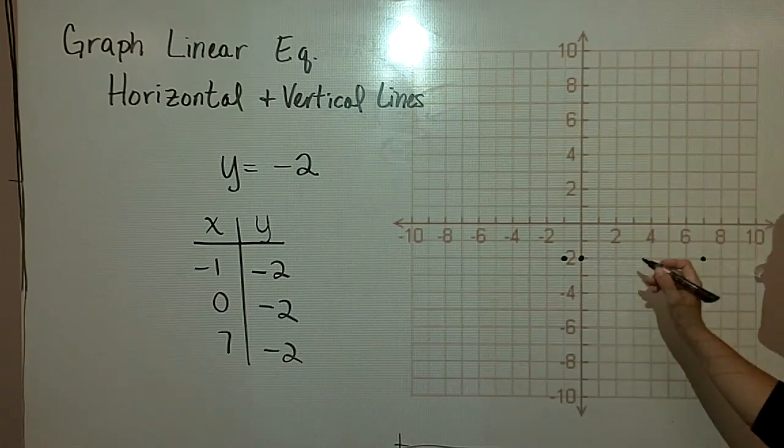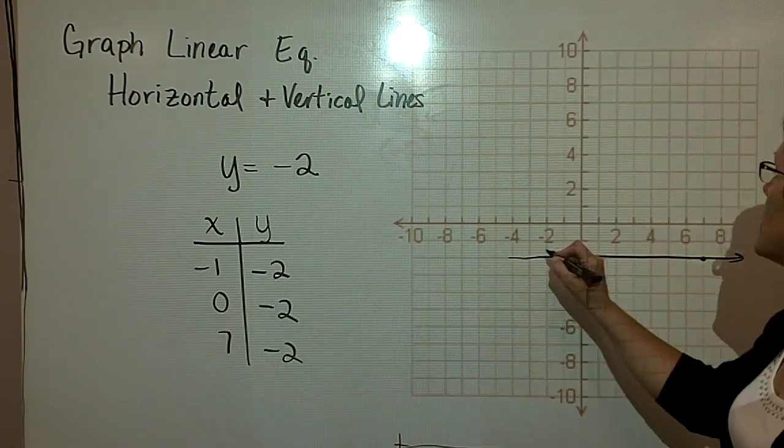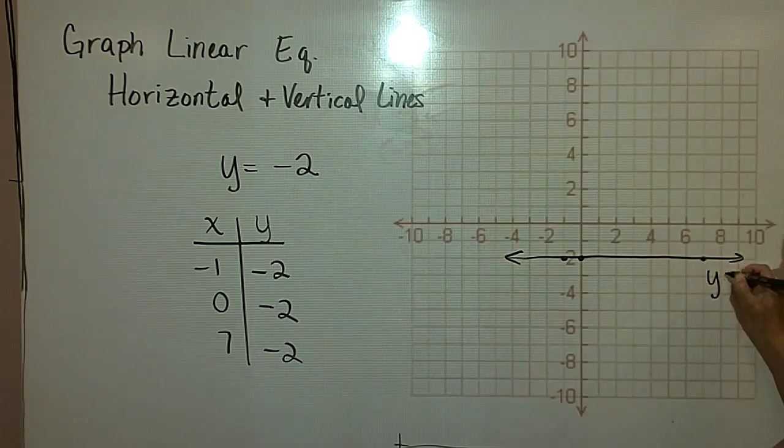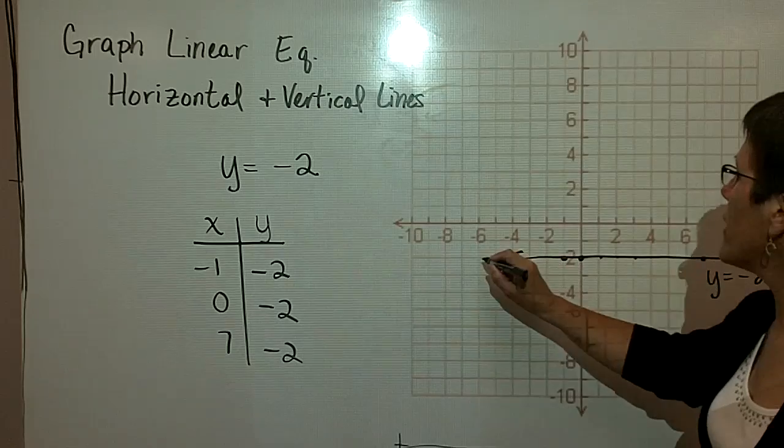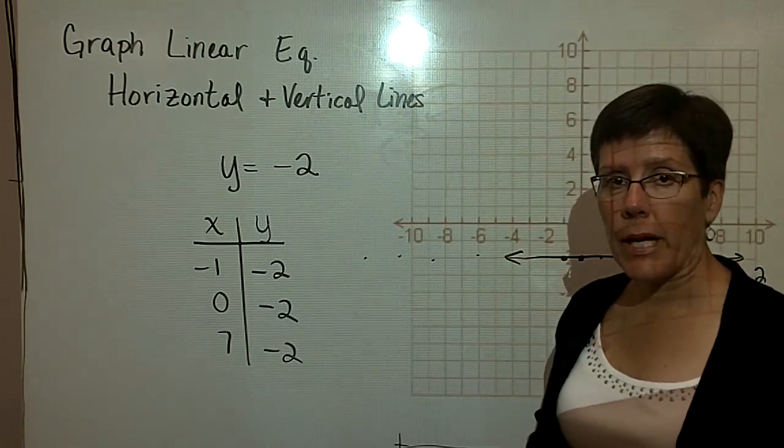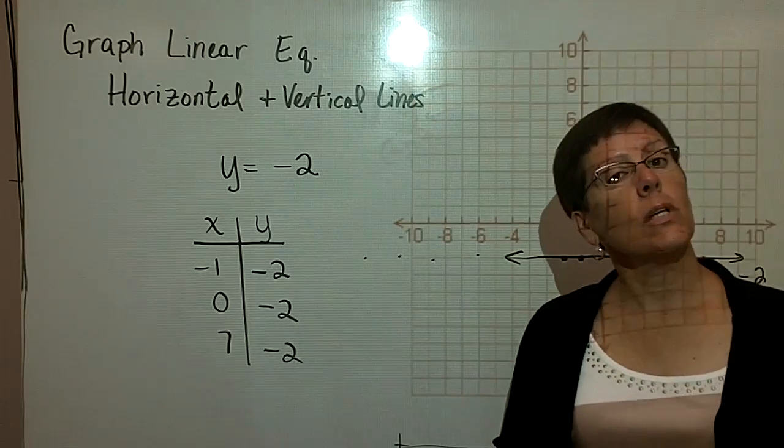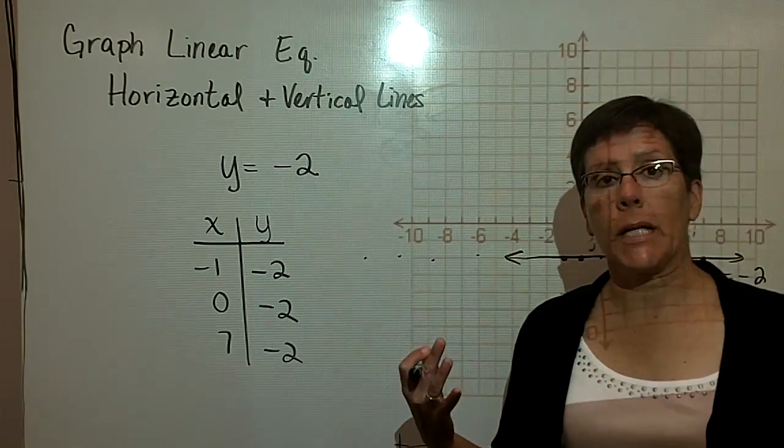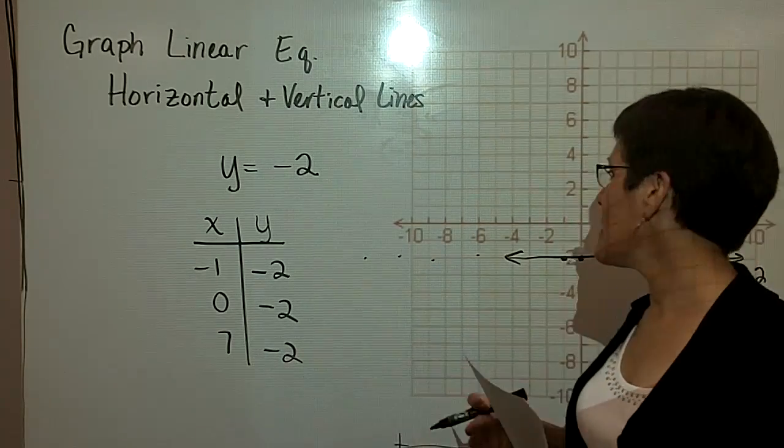And I see the graph of a horizontal line that represents y values always being equal to negative 2. So every ordered pair on that line, the y value is equal to negative 2. And again, please notice, for an equation where y equals any number, it doesn't really matter what it is, you get a horizontal line, and that is something that's perpendicular to its own axis.